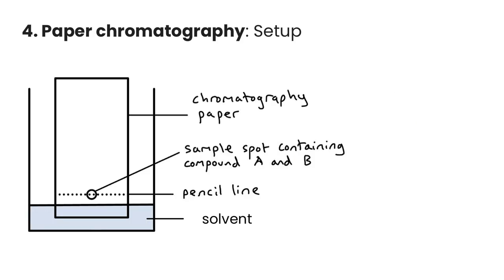The last method is chromatography. There are a couple of types. We're going to talk about paper chromatography first and its setup. Essentially, what we do is we have a container that has a very small amount of solvent. This could be something that's polar, it could be something that's nonpolar, it depends what sort of separation we're going for.